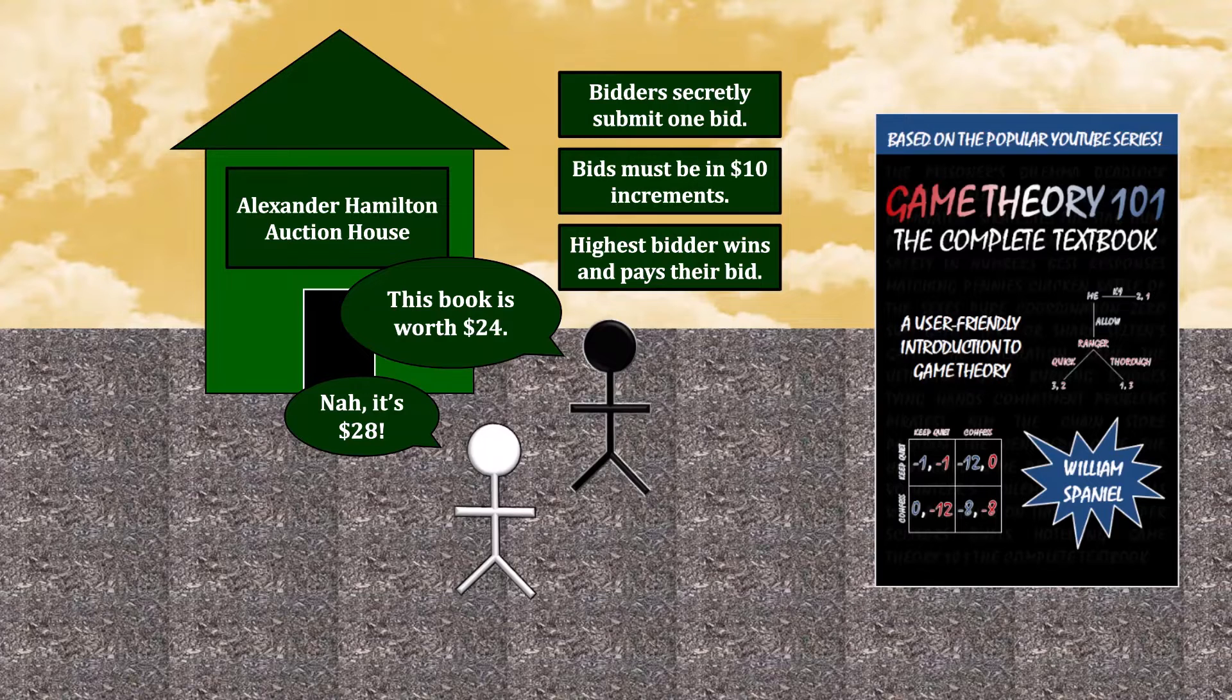As a hint, you need to think about Nash Equilibrium, which is a topic I cover in Chapter 1 of Game Theory 101, The Complete Textbook.